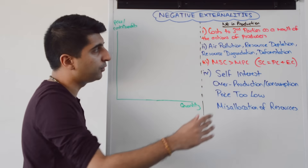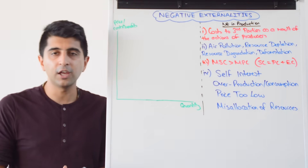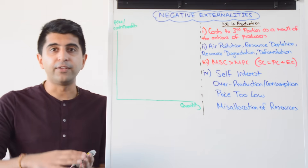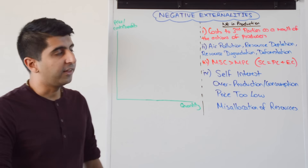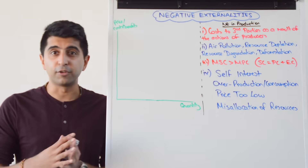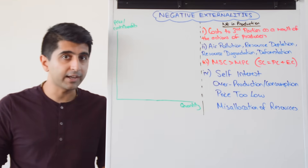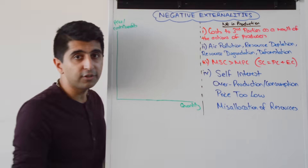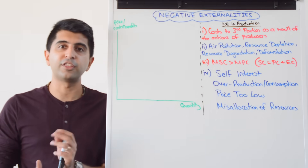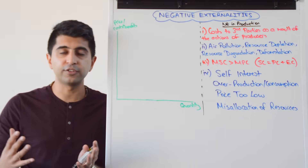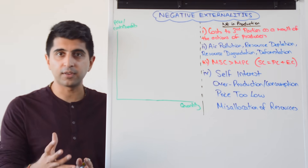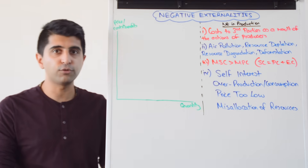Good examples could be air pollution. If firms are producing metals, textiles, or chemicals, and there is air pollution as a byproduct, local residents could be the third party that suffer from respiratory problems or a greater risk of lung cancer. Another example is resource depletion — if resources are depleted, maybe future generations are the third party. They suffer from a loss of income and from not being able to consume the goods and services made out of those resources.